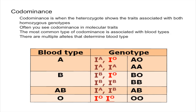In this video I'm going to talk about codominance as well as explain what multiple alleles are. Codominance is when the heterozygote shows the traits associated with both homozygous genotypes.